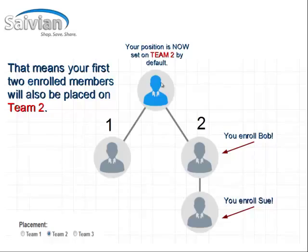So you're at the top, underneath your sponsor. The first person, Bob, you enroll goes down Team 2. The second person you enroll, Sue, is also going to go down Team 2 because you want to put your first two on one side.